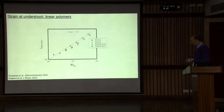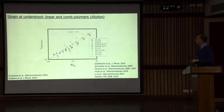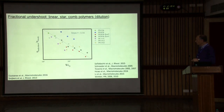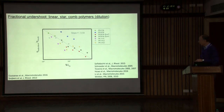Let's see the scaling of the undershoot. Plotting strain of the undershoot as a function of Weissenberg number for linear data — melts and solutions — and adding combs, the scaling is pretty much consistent within error. Looking at fractional undershoot for linear data, melts and solutions, and adding stars and combs, within the uncertainties of the experiment there are universalities which are followed, and that's the key point.